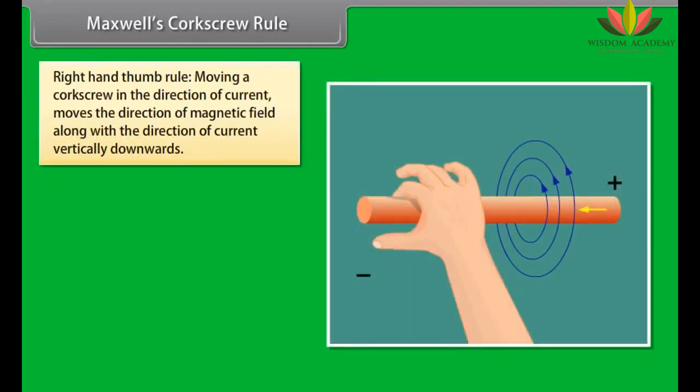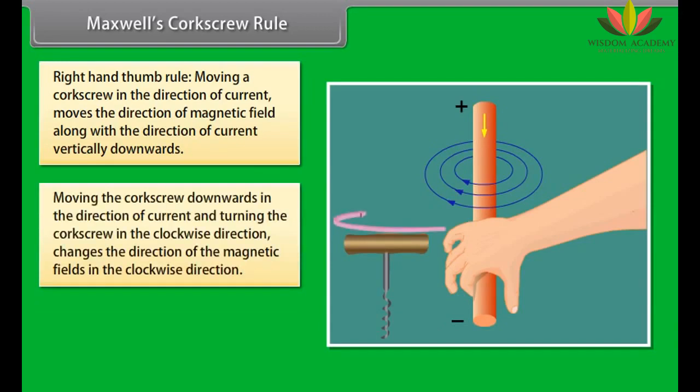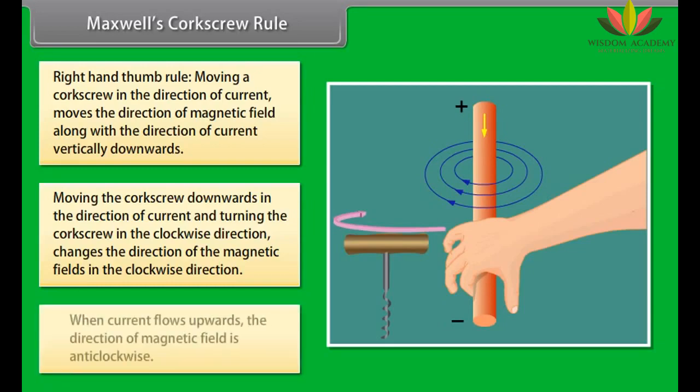Maxwell's Corkscrew Rule, also known as Right Hand Thumb Rule, defines that moving a corkscrew in the direction of current moves the direction of magnetic field along with the direction of current vertically downwards. If we move the corkscrew downwards in the direction of current and the handle of corkscrew is turned in the clockwise direction, then the direction of the magnetic fields is in the clockwise direction. So, when current flows upwards, the direction of magnetic field changes and is anticlockwise.